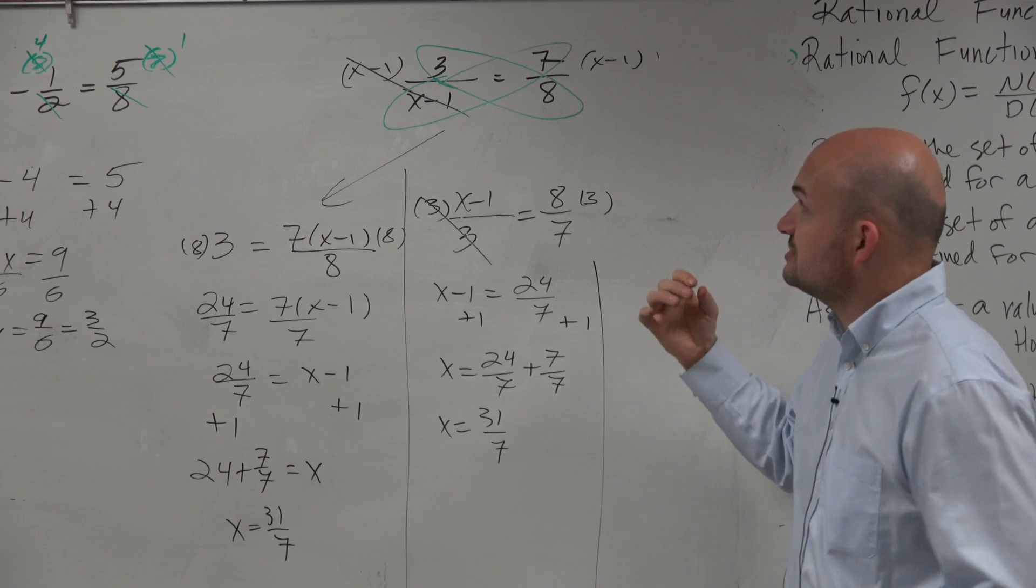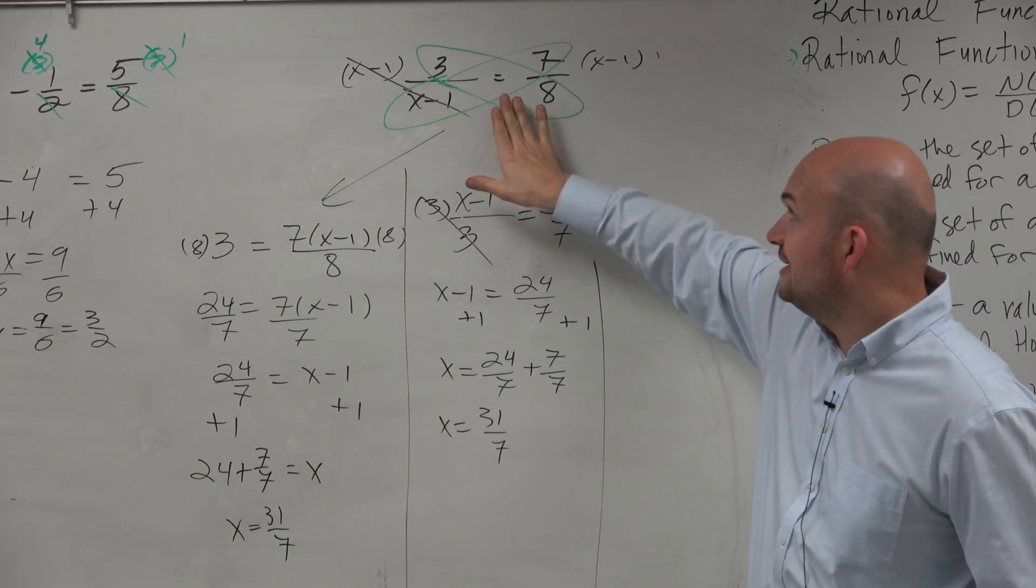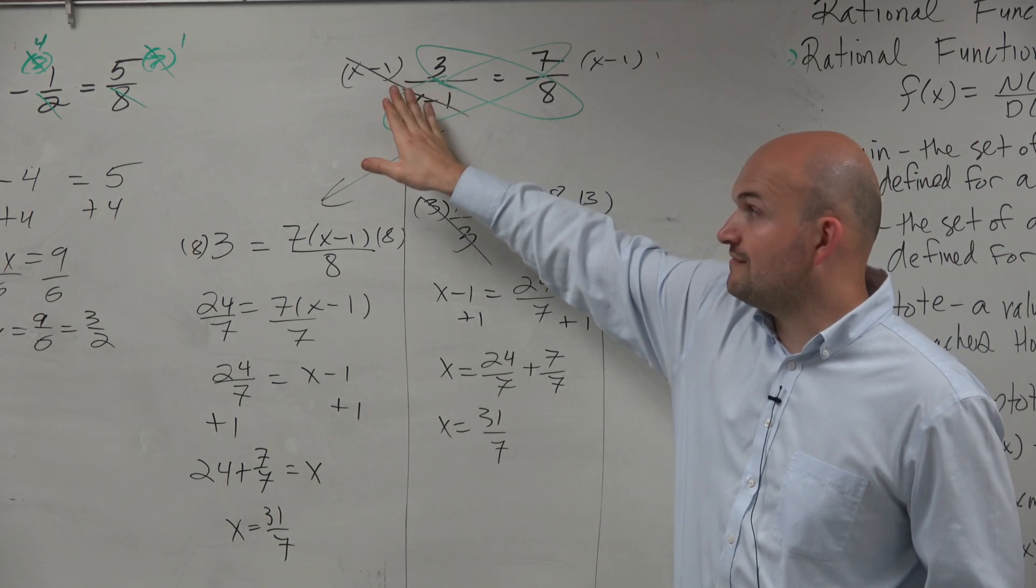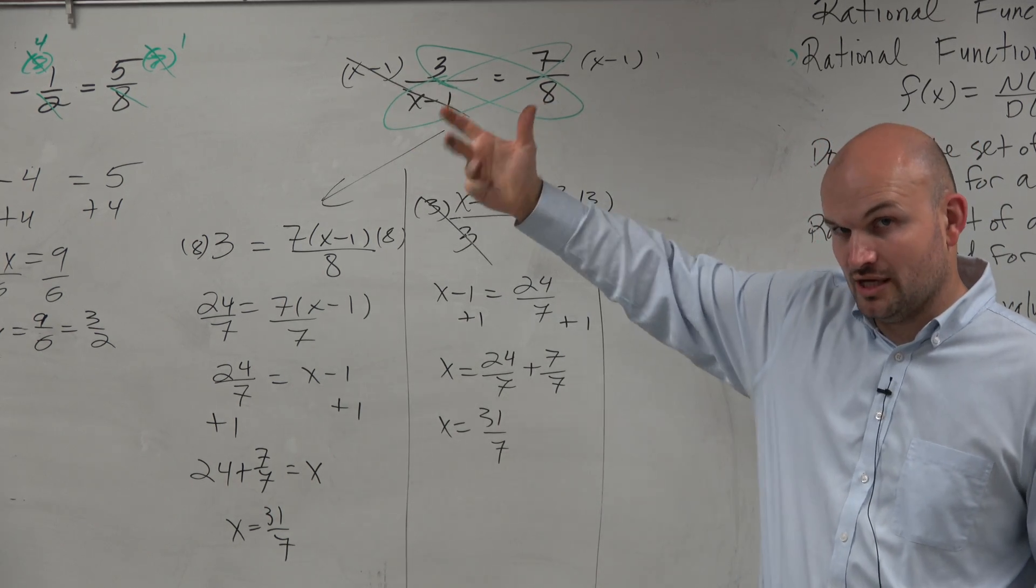Cross multiplication only works, guys, when you have a proportion equal to another proportion. All right? And then also, you're going to have a product equal to the other product.